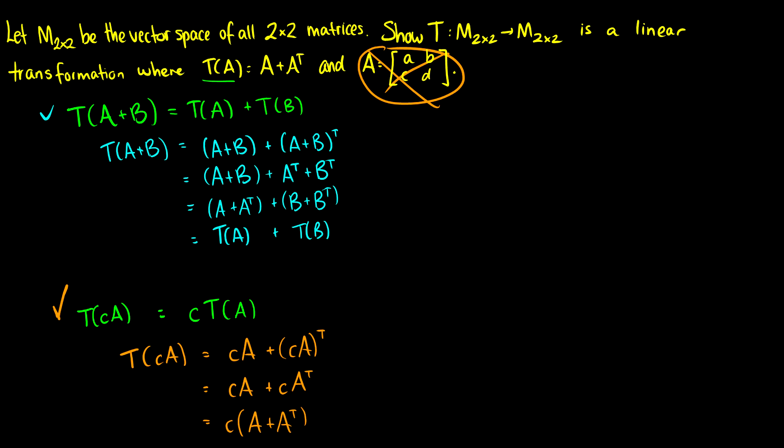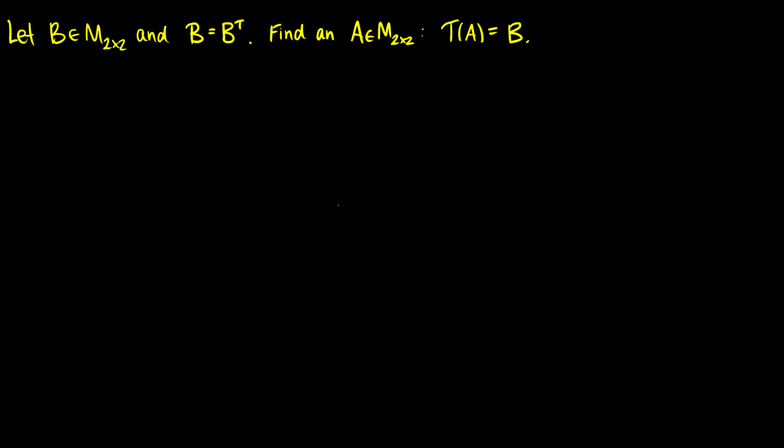Second part, I'm going to let B be in the set of two by two matrices. So this is the vector space of two by two matrices and B is going to equal B transpose. I want to find an A such that the transformation of A is equal to B. So just as a reminder, the transformation of A is equal to A plus A transpose.